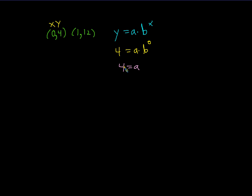And then with that, we should be able to use that 4 and these two x and y's to figure out what b is. Let's give it a shot. So we'll say y, 12, is equal to 4, which is the a, times b, which is what we're looking for, raised to the power of this new x, which is 1.